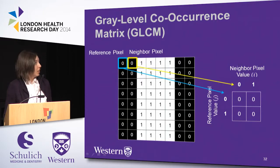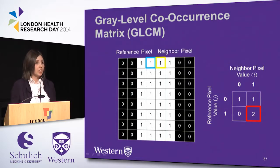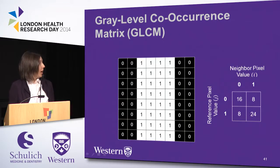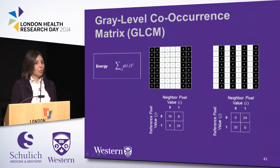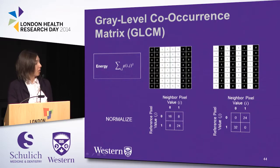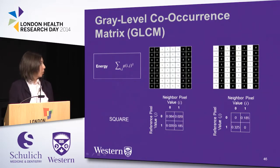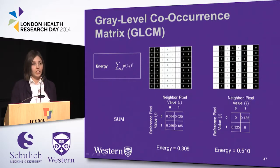In our example, we look up the reference pixel and neighbor pixel, find the corresponding spot, and add one as it has occurred once. We do this for every pixel as the reference pixel in the first row and update the GLCM accordingly, completing this for the entire image to get a final GLCM. From this we can calculate several different texture features — for example, energy, which is just the sum of squares of the GLCM. Before calculating, we normalize the GLCM so values add to one, then square each value and sum them to get the final energy value. Recall that although these two images had the same first-order texture, they can be better differentiated by the second-order texture feature.